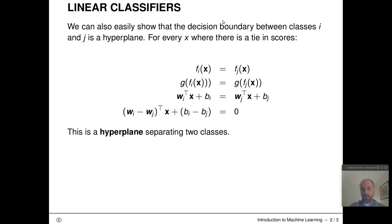For every x where there is a tie in scores, the following holds with equality: f_i(x) must be the same as f_j(x).